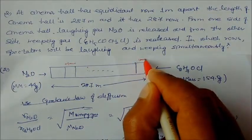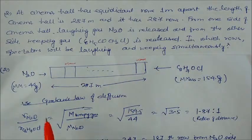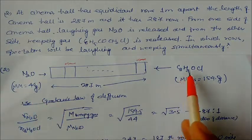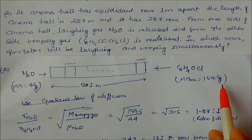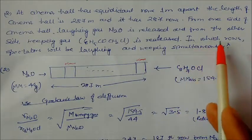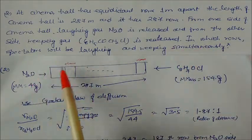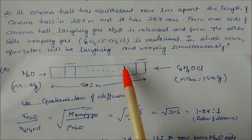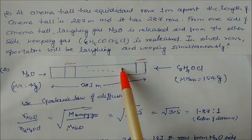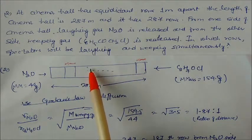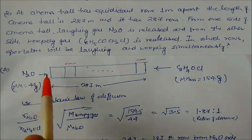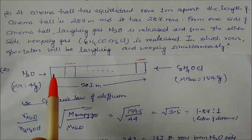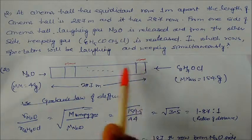The molar mass of nitrous oxide is 44 grams, while the molar mass of the weeping gas is 154.5 grams. We need to find in which row the spectators will be laughing and in which row they will be weeping. To find this, we apply Graham's Law of Diffusion, since both gases are diffusing through the atmosphere toward each other.